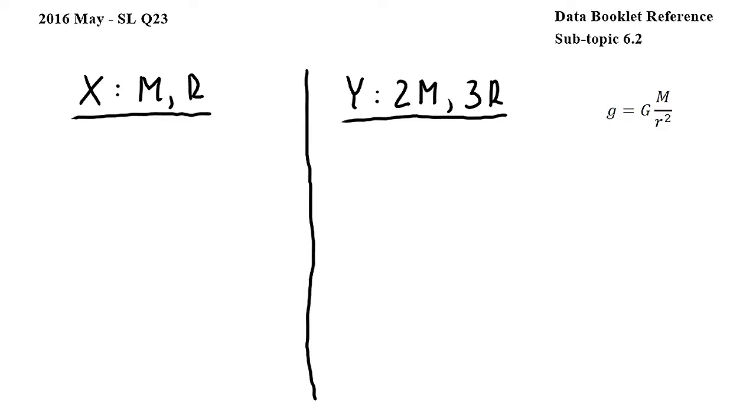In this question, planet X has mass m and radius r, planet Y has mass 2m and radius 3r.